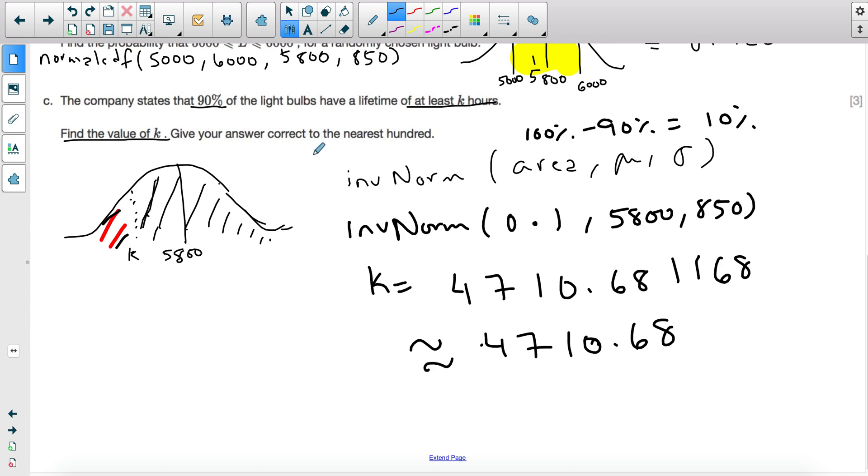Now remember that the question wants correct to the nearest 100. If you didn't do the correct rounding, then it's going to be wrong. So this is your nearest unit, 10s, 100. So I'm looking at the 7. I'm going to look at the number next to it. It's 1, it's less than 5, so I don't add anything to the 7.